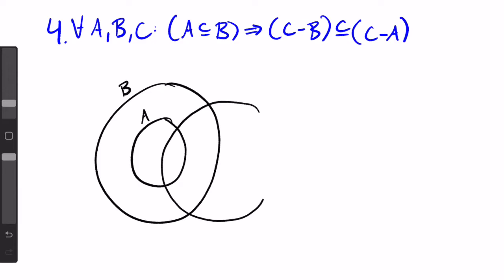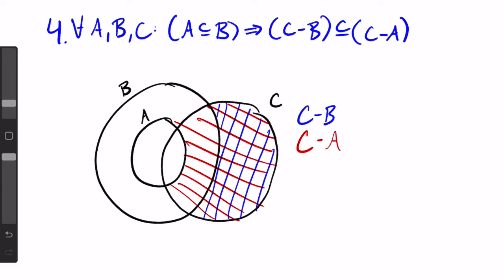The fourth subset property is for all A, B, and C: if A is a subset of B, then C minus B is a subset of C minus A. Drawing it out, here's C minus B and here's C minus A. We can see that when we minus B, we're just taking away the part that's minus for A plus a little bit more.